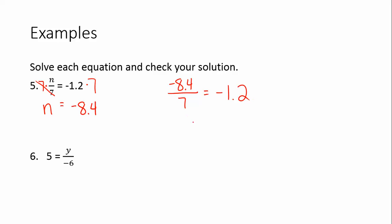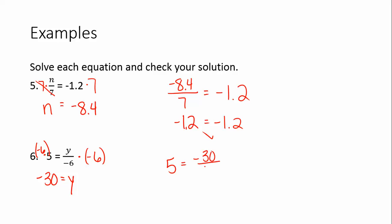You check your answer by plugging negative 8.4 in for N and dividing by 7 — that should equal negative 1.2. If you check it in a calculator or do it longhand, you do in fact get negative 1.2 equal to negative 1.2, so our answer checks out. Number 6 is very similar: 5 equals y divided by negative 6. Multiply both sides by negative 6, and we get negative 30 equals y. Plugging in: negative 30 divided by negative 6 is positive 5, so our answer checks out.